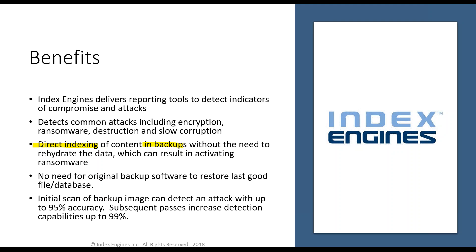The analysis done in backup images doesn't allow ransomware to spread any further. There is no need for the original backup software in the vault — IndexEngine handles direct access to the backup images. Based on our analysis, the initial scan of the backup image can detect an attack with up to 95% accuracy. For clients looking for confidence that data going into the vault is clean, this is the answer. Subsequent observations increase detection capabilities up to 99%.